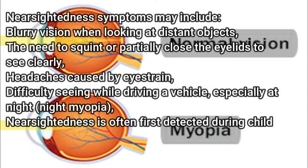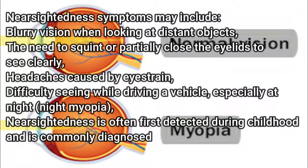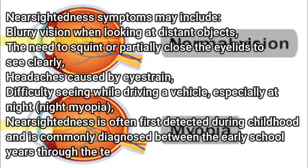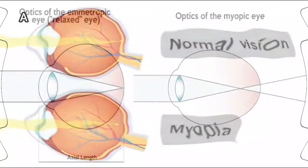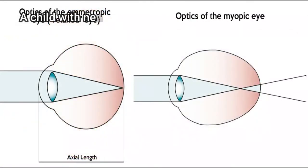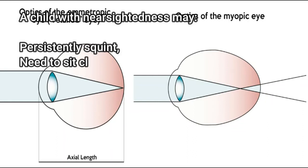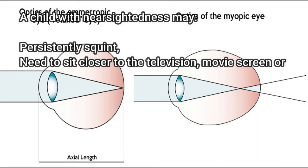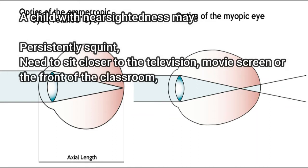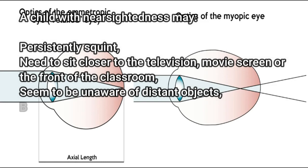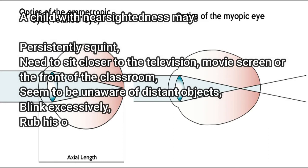Nearsightedness is often first detected during childhood and is commonly diagnosed between the early school years through the teens. A child with nearsightedness may persistently squint, need to sit closer to the television, movie screen, or the front of the classroom, seem to be unaware of distant objects, blink excessively, or rub his or her eyes frequently.